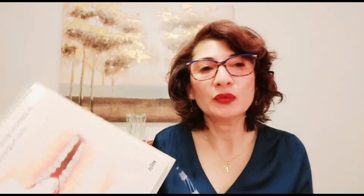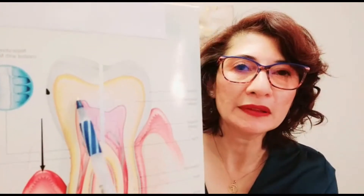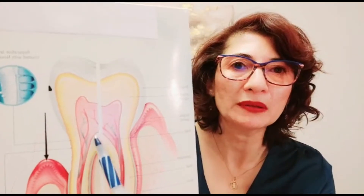We see these on x-rays, and I'll show you what it looks like. This white part is your enamel, the yellow part is your dentin, and this is your pulp chamber, which feeds the tooth.